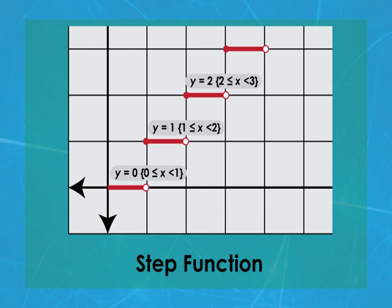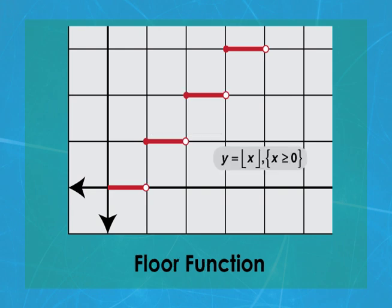A shorthand way of writing this in function notation is to use the floor function, which encloses x within these special brackets. This is how the floor function works. For each input value of x, round down to the nearest integer.